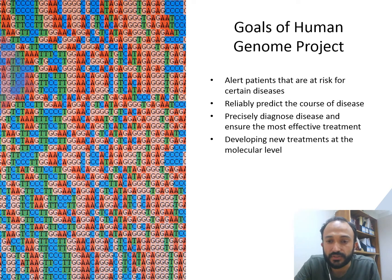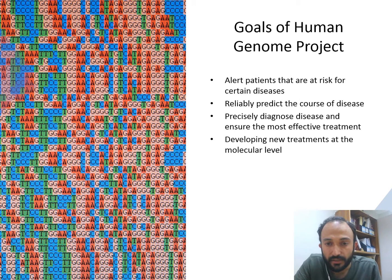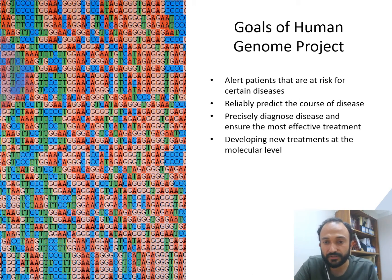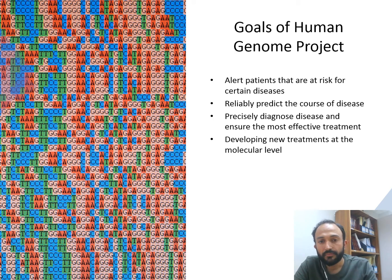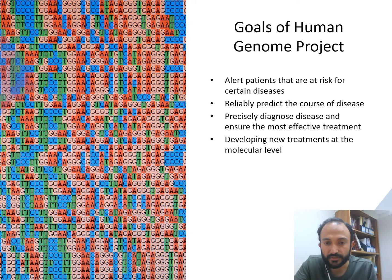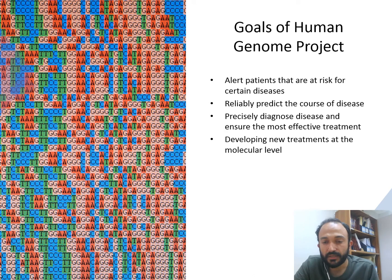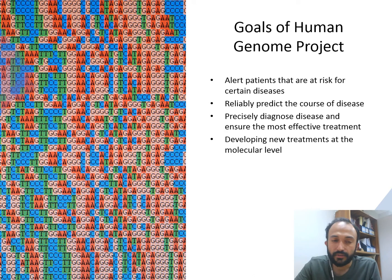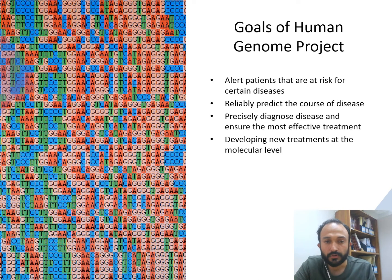When scientists knew that a specific genomic change was repeatedly occurring in a disease, they could devise an effective treatment strategy to check whether that treatment would improve the patient's prognosis. If the treatment was working, they could say that it could be further developed at the molecular level.